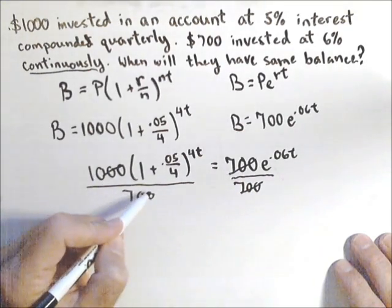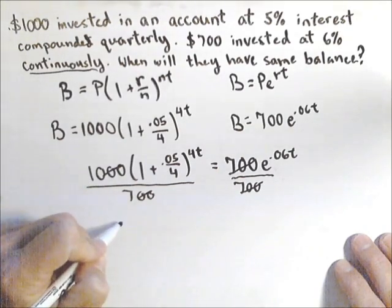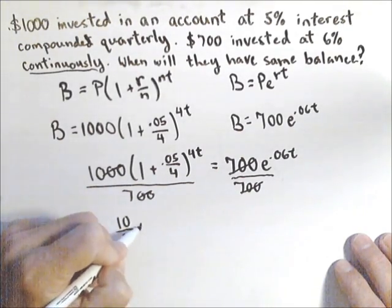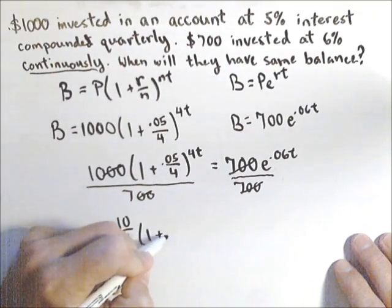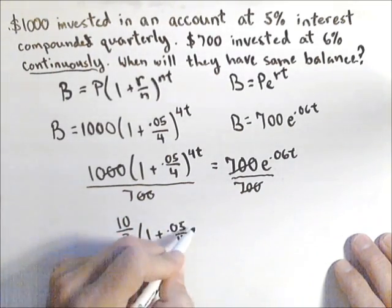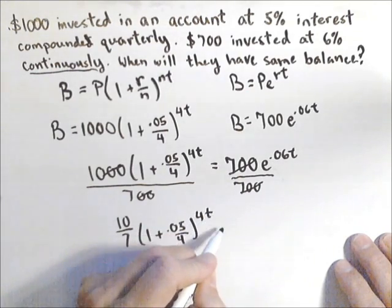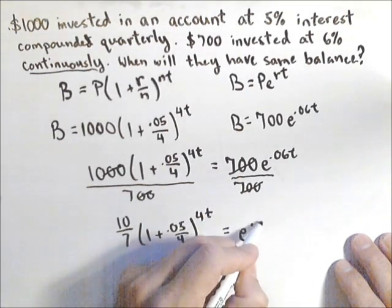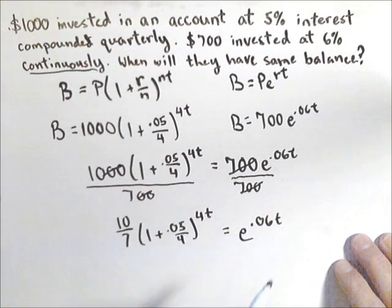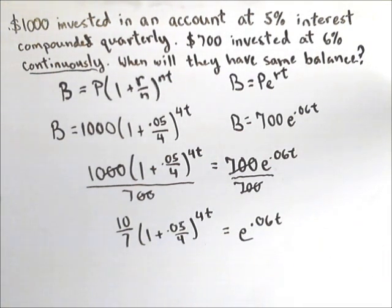And here we can cancel out two of those and we're going to get 10 sevenths. So I have 10 over 7 times 1 plus .05 over 4 to the 4t equals e to the .06t. Now we're going to use logs to help us simplify so that we can get a little bit nicer numbers to deal with. And we can simplify what's inside these parentheses as well.